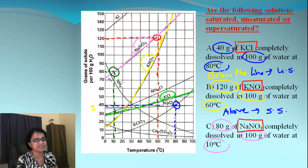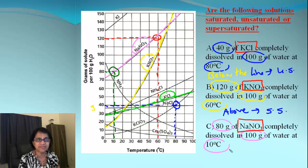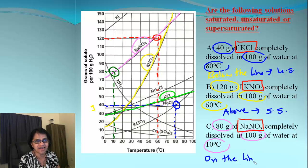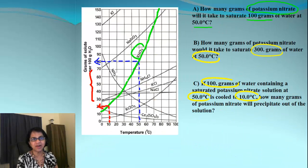The third example is sodium nitrate, shown with a purple line. We have 80 grams dissolved in 100 grams at 10°C. We go from 10°C and 80 grams and locate the point — it is exactly on the line. If it is exactly on the line, the solution is saturated.